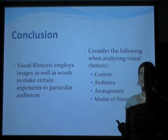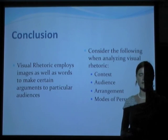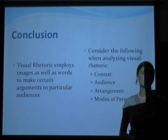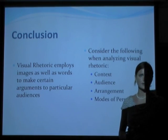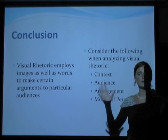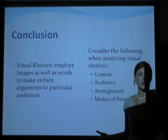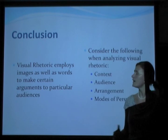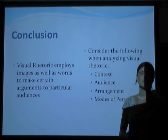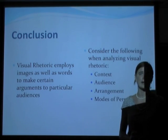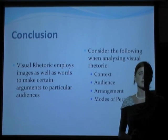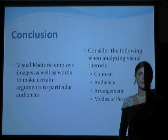In conclusion, the four main things we're looking for when dealing with visual rhetoric are: the context of the piece itself, the audience to which it appeals, the arrangement and how it contributes to the larger argument of the visual rhetoric piece, and then an analysis of the modes of persuasion — logos, ethos, and pathos — and how those contribute to the argument of the piece as well. Thank you.